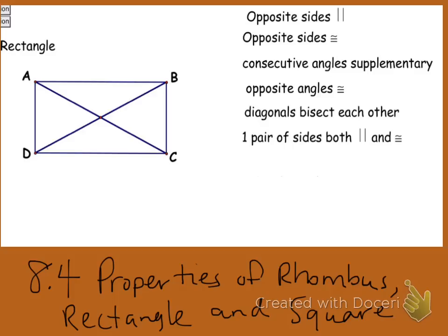We're talking about these three shapes, all of which are parallelograms. Initially, in order to determine if you have a rectangle, rhombus, or a square, you still have to have the same initial six properties of a parallelogram. So if you want to copy those down, you can, but you still have to have the same six properties of the parallelogram memorized. It's very important.